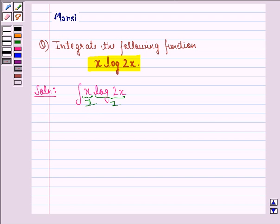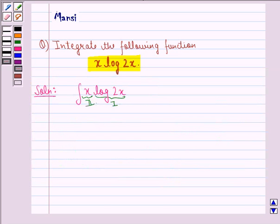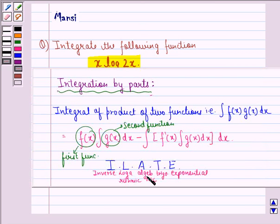As per the ILATE rule, logarithmic function is given preference over the trigonometric function or the algebraic function. Since x is an algebraic function and log x is a logarithmic function, log 2x becomes the first function.